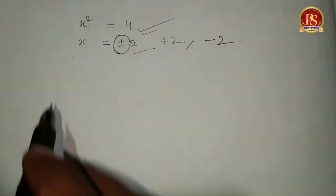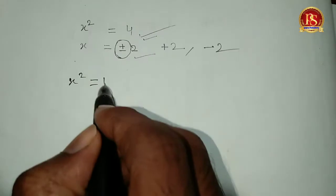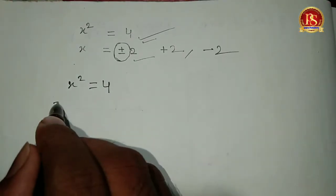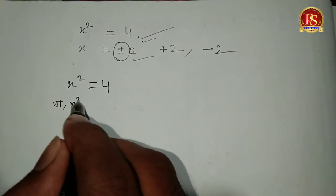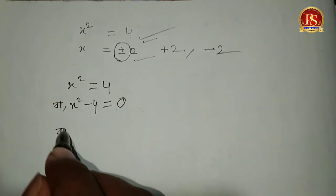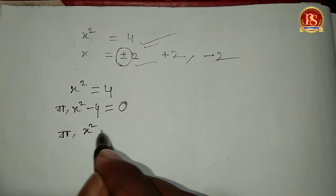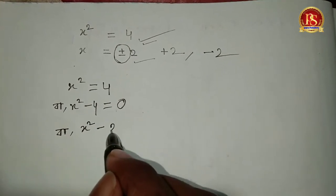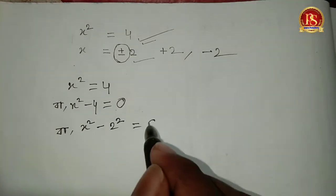As you know, we have x² = 4. We can rewrite this as x² - 4 = 0. Now observe that we have x² - 2², which is the difference of two squares.